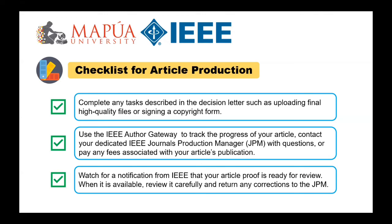Number four: you will be contacted when an article proof PDF is ready for review. This is the last time you will be able to make changes to your article before publication, so review the proof carefully and submit any edits as required. Typically your article will be finalized within two to three weeks from the start of the production process, though actual production time can vary depending on the individual journal's publication constraints and processes.